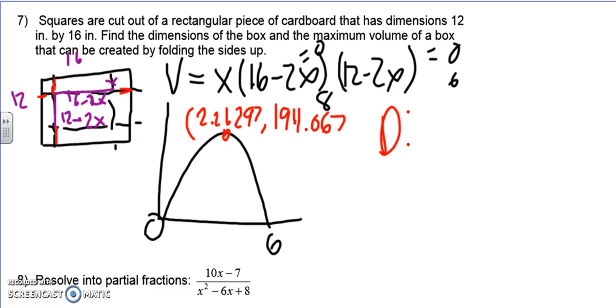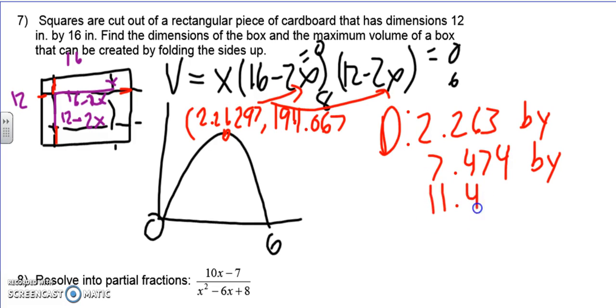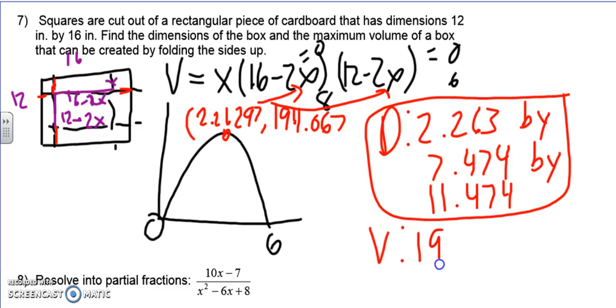It says define the dimensions of the box. So dimensions are length, width, and height. So obviously, my first one is 2.263 by, now I've got to take my x number and plug it in to each of those. So when you plug it in, you should get 7.474. And then my other side should be 11.474. So those are my dimensions. Find the dimensions of the box and the maximum volume. Volume is my y value. So 194.067. And that's my final answer.